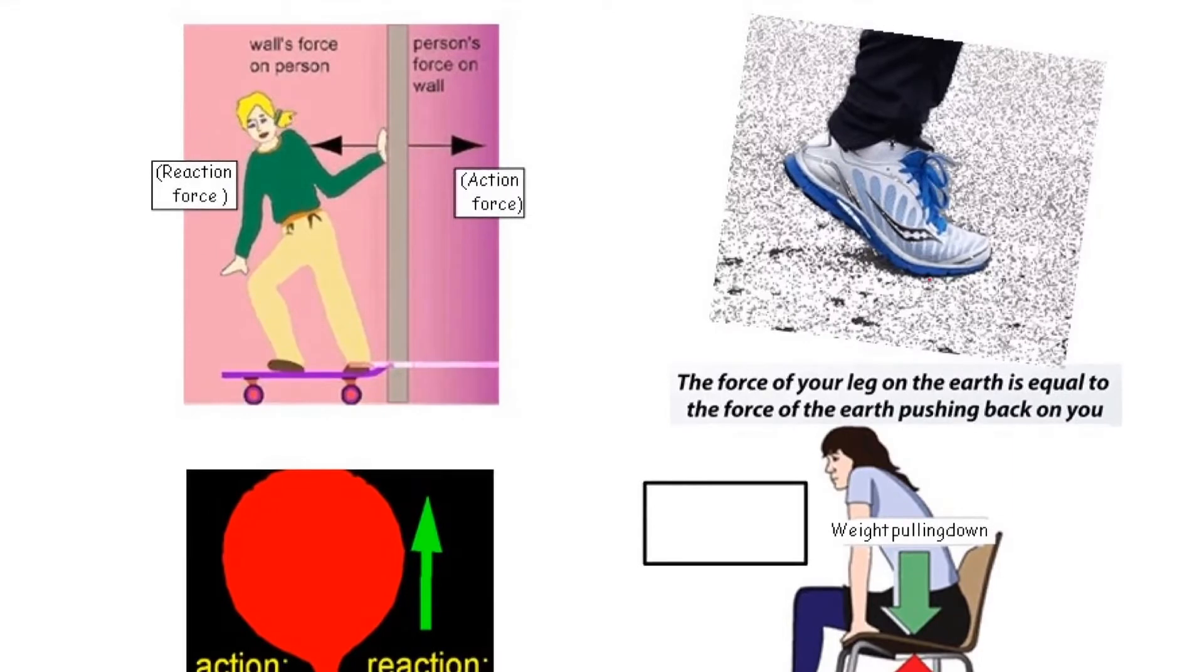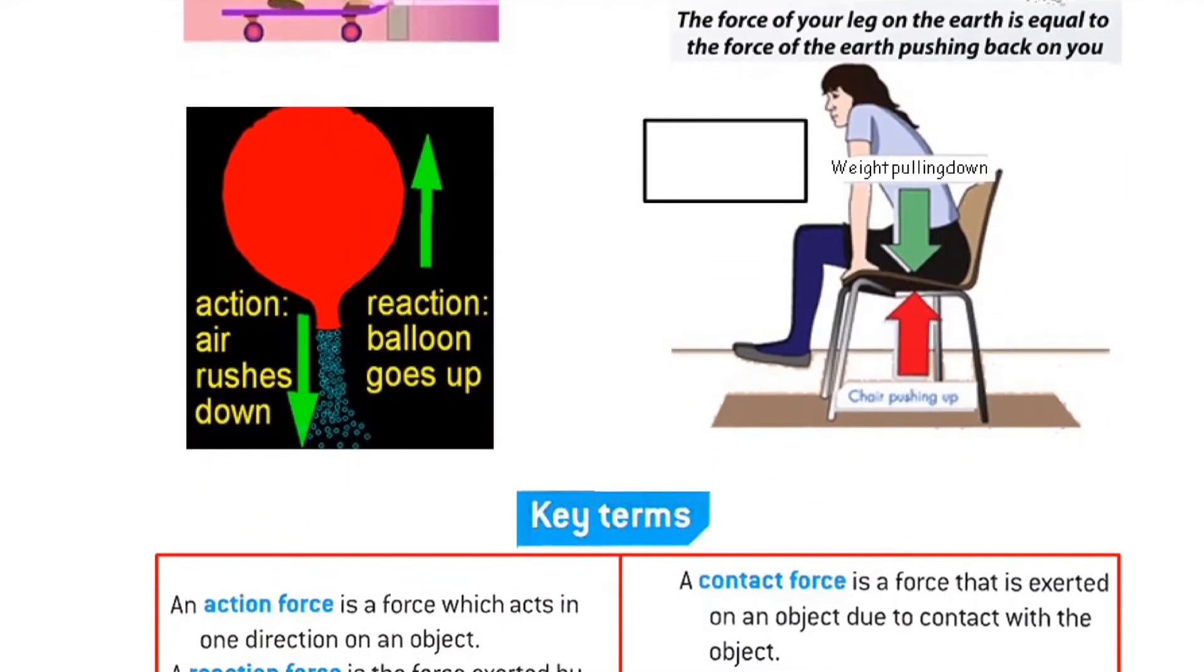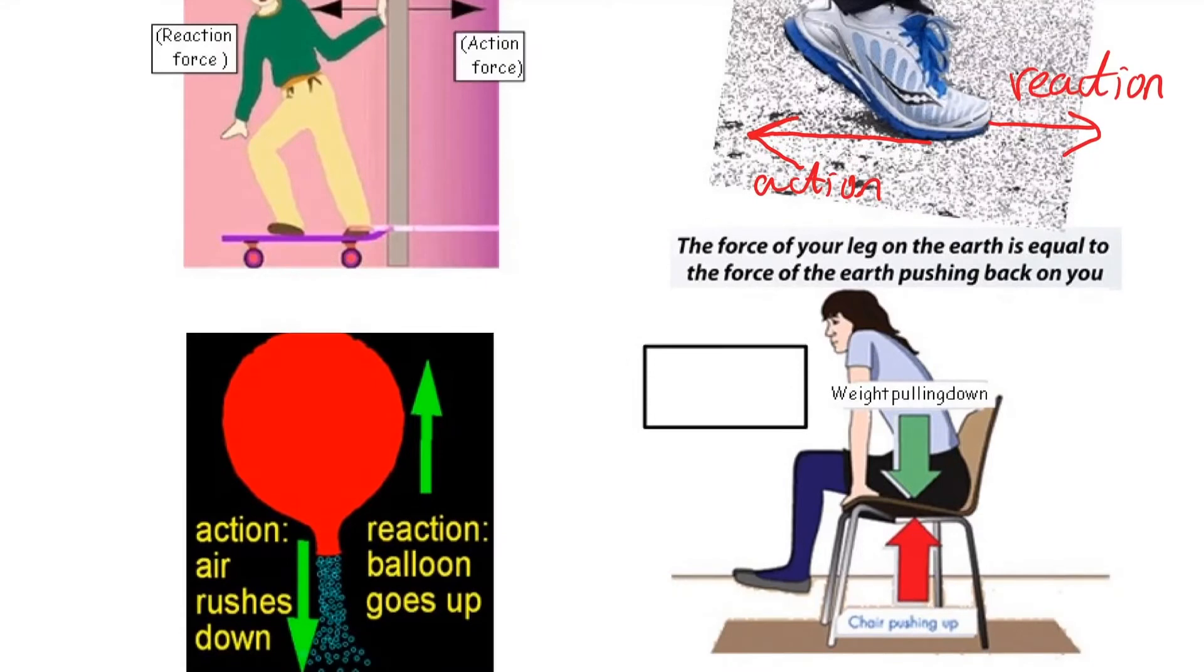When you're walking or running, the action force is the trainer or shoe pushing back on the ground, and the reaction force is the ground pushing back on the shoe, which is what propels or moves the person forwards. You've all had fun in letting go of an inflated balloon and watching it randomly move around the room. The action and reaction force: you can see the air rushing out as the action and the reaction pushing the balloon up. The rocket works on exactly the same principle, although rockets have a guiding or steering system so they don't fly randomly around in the sky. That would be very dangerous.